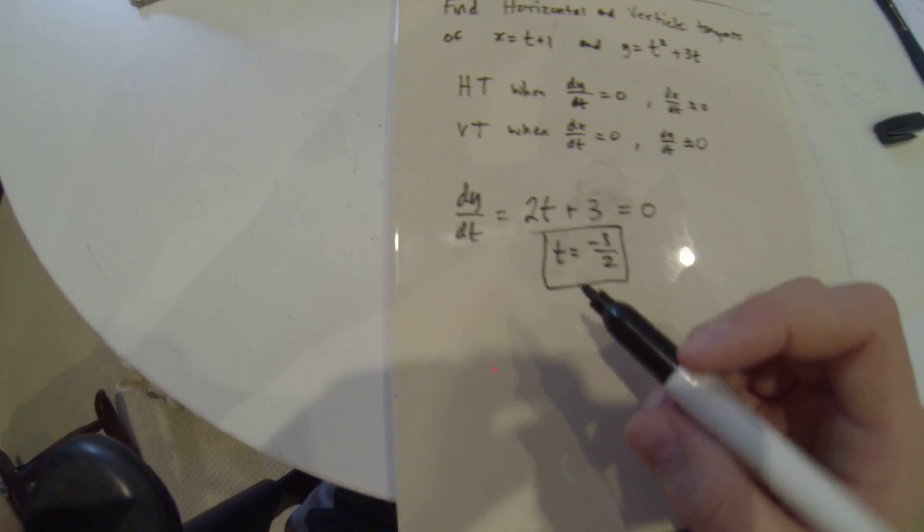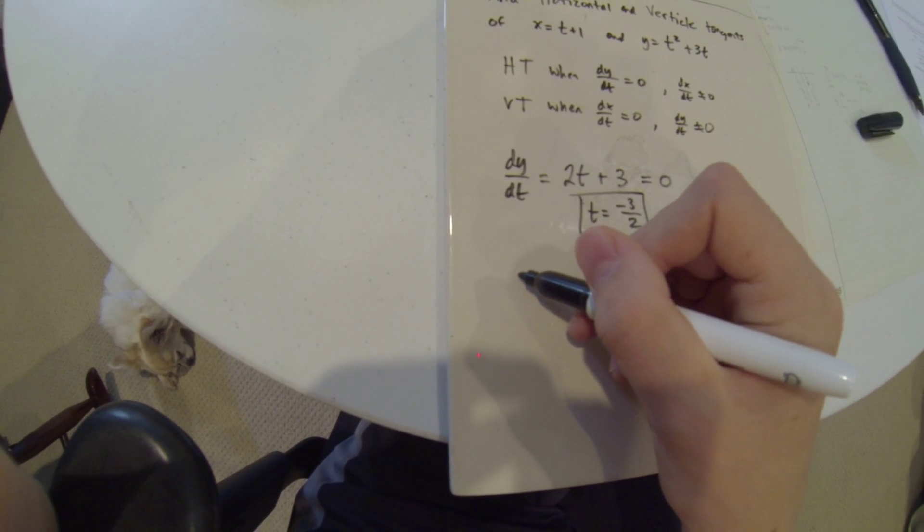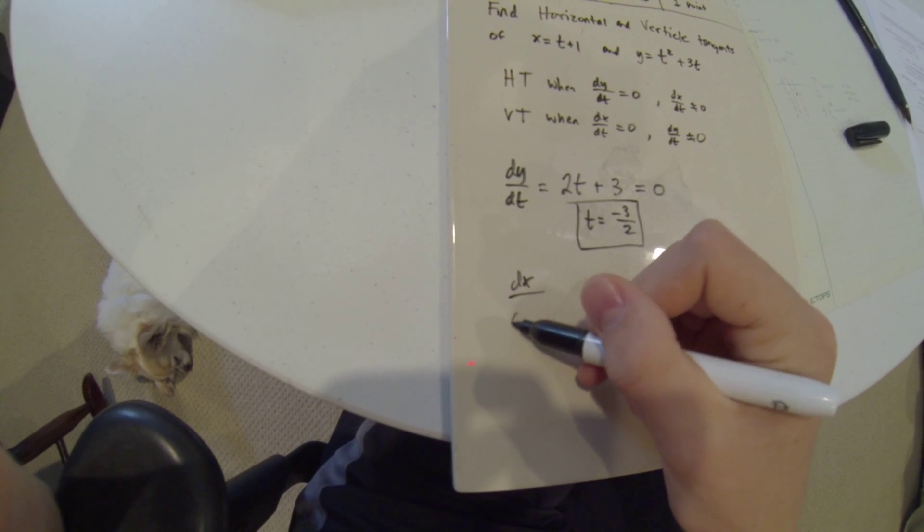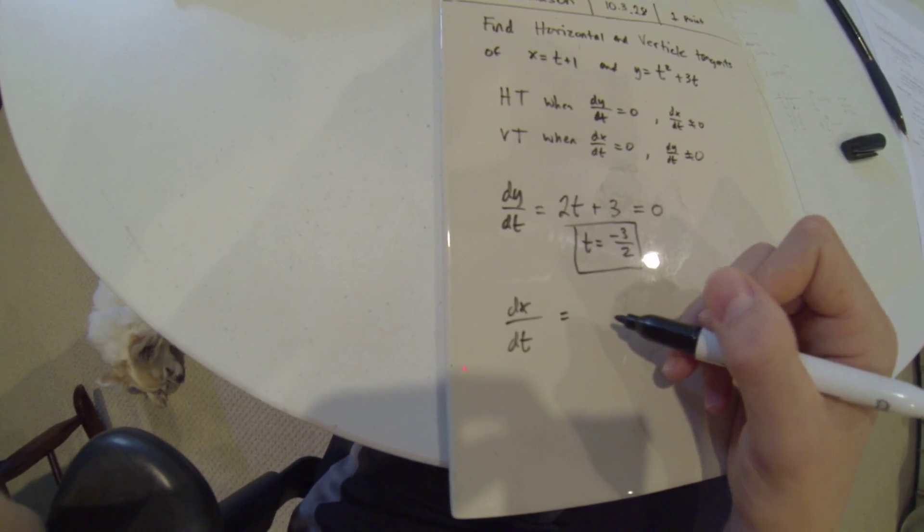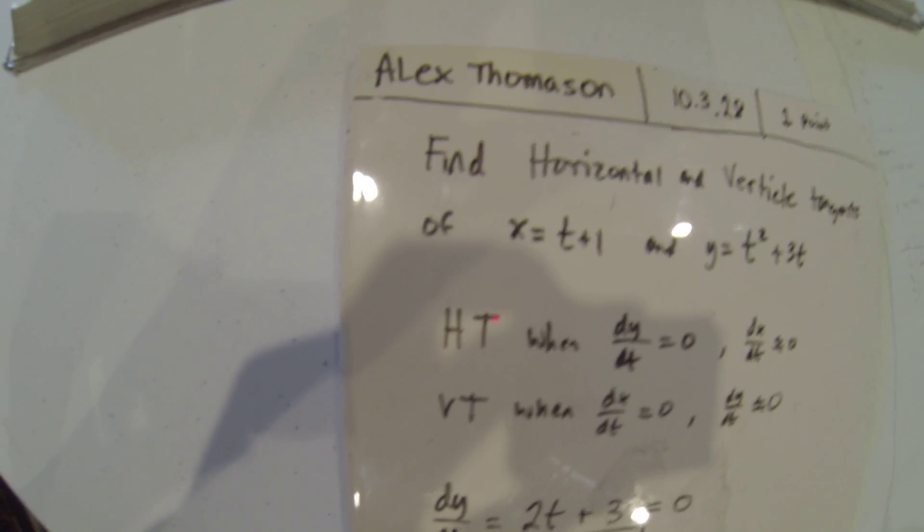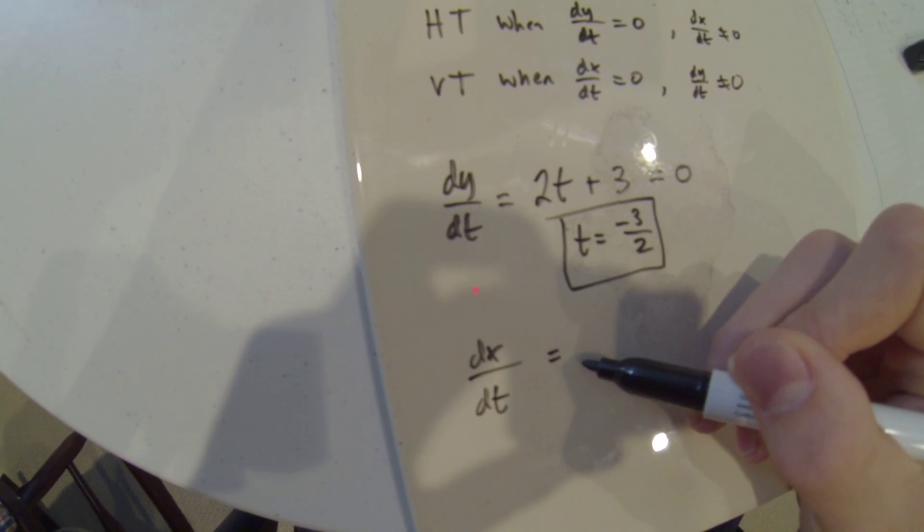And then for a vertical tangent, dx dt equals, you just look up here, x equals t plus 1, so we know the derivative is just 1.